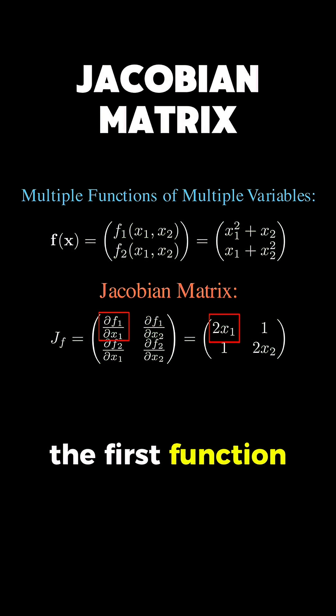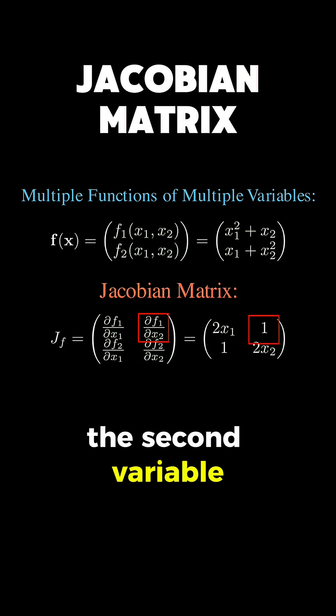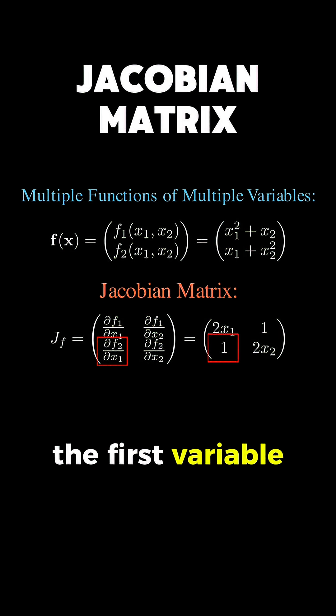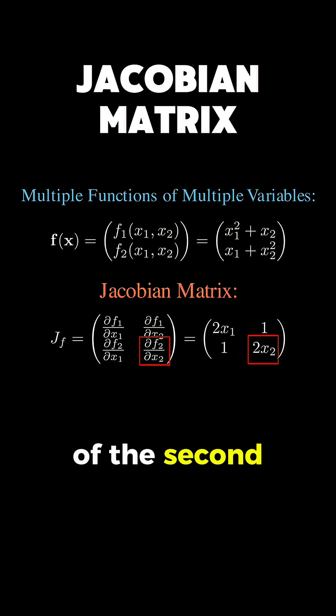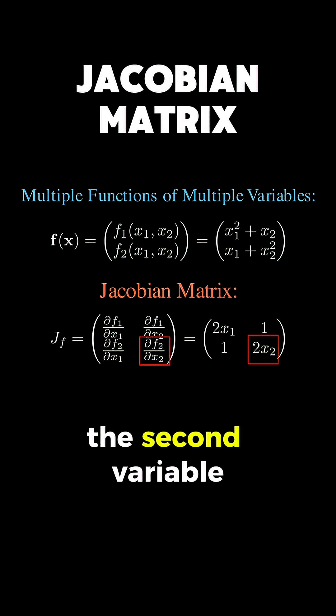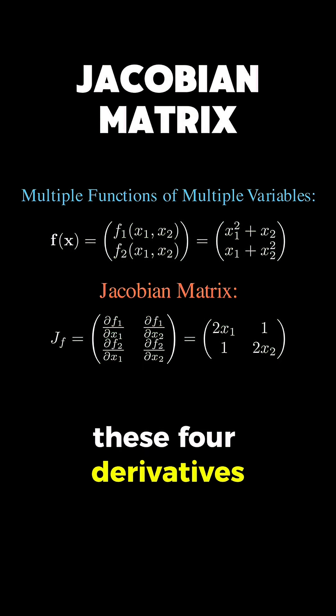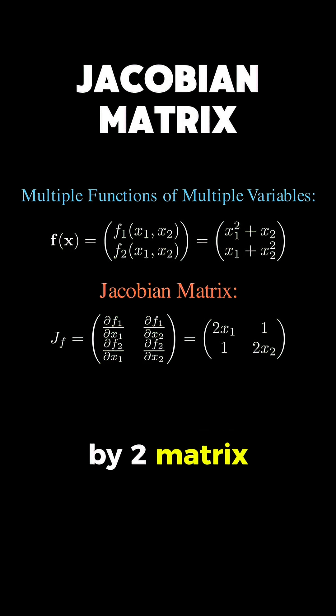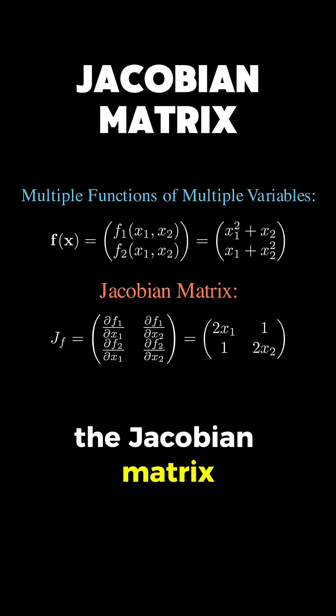The partial of the first function with respect to the first variable, the partial of the first function with respect to the second variable, the partial of the second function with respect to the first variable, and the partial of the second function with respect to the second variable. These four derivatives form a 2 by 2 matrix that we call the Jacobian matrix.